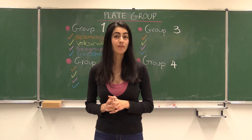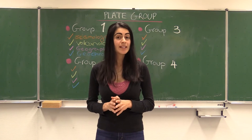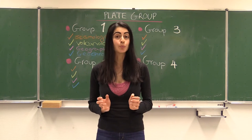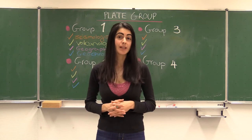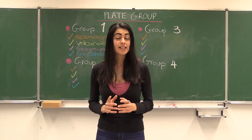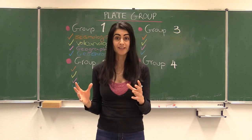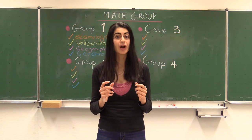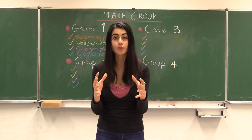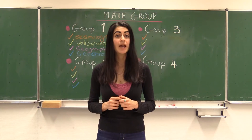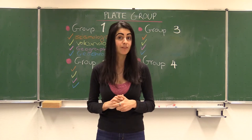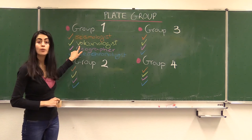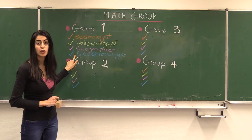Welcome back! This is part 2 of the plate boundary lesson. In this part, your teacher is going to give you a plate name, and based on that plate name you're going to break into groups — different groups than what you had before. Instead of having all the earthquake scientists or seismologists in one group, or volcanologists in one group, we are going to grab one person from each group and put them into a new group. In other words, every group contains one seismologist, one volcanologist, one geographer, and one geochronologist.